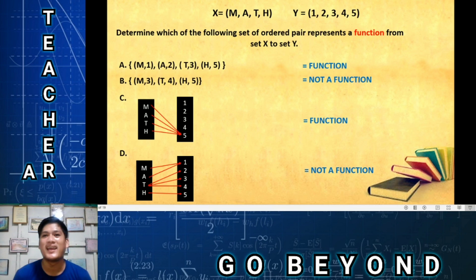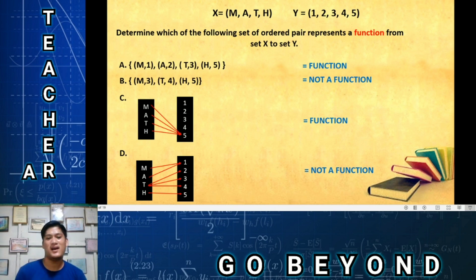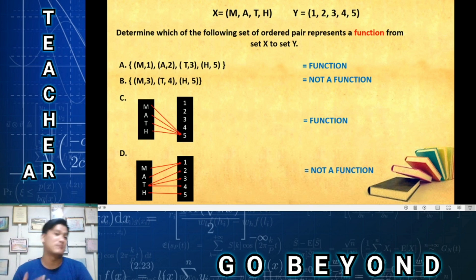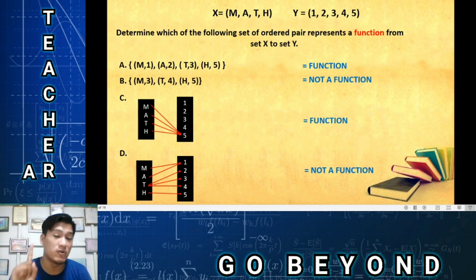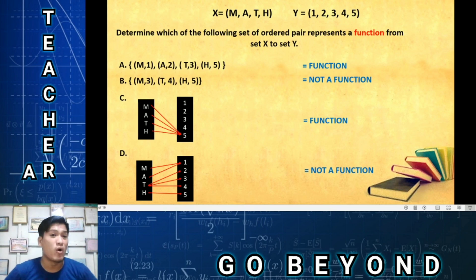Letter D is NOT a function. Why? Because t — one of the x values — corresponds to three different values of y. Remember: x must correspond to one and only one value of y. Since t corresponds to three values, that violates the definition, so letter D is not a function.